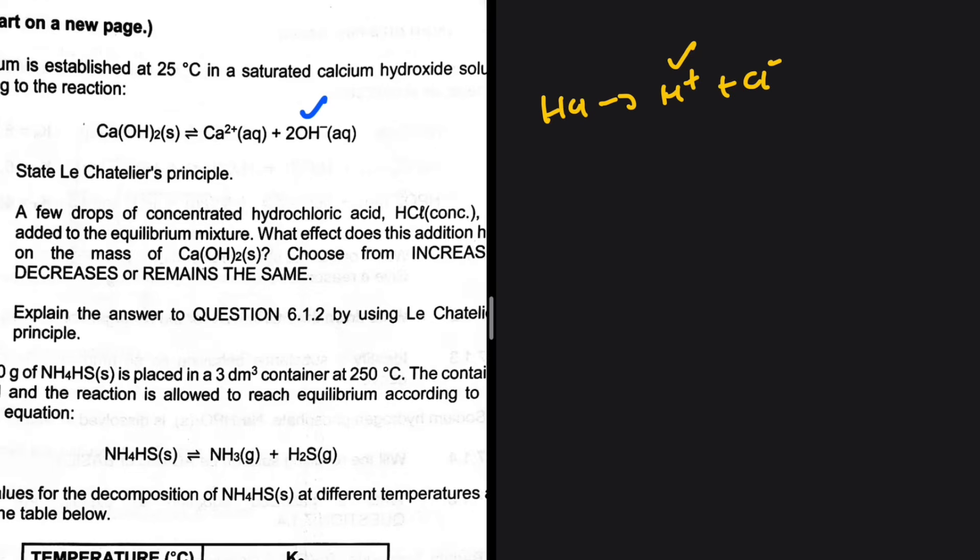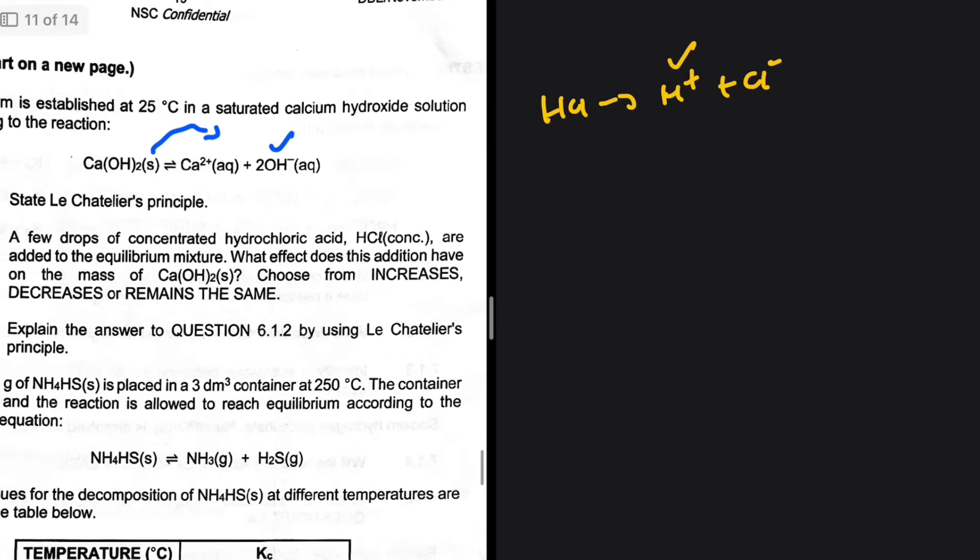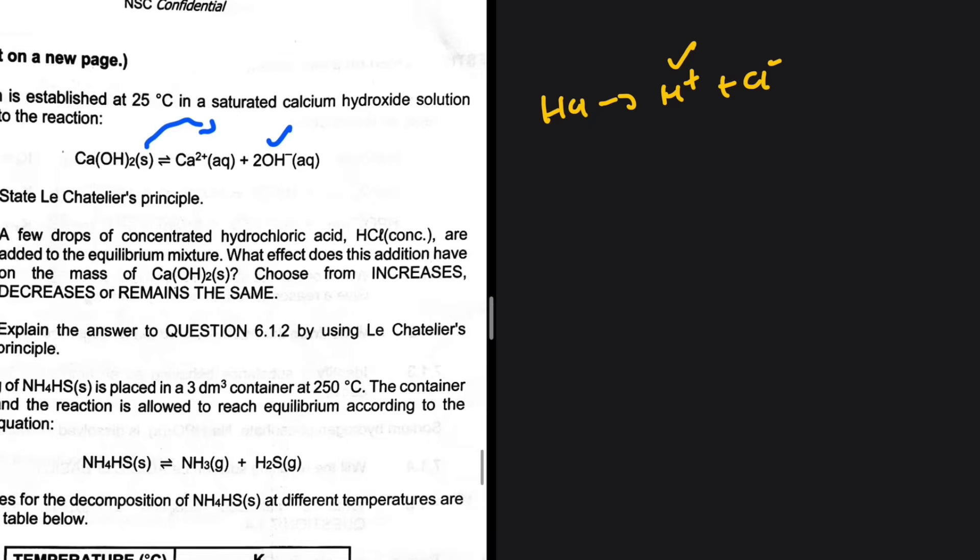If the amount of OH- goes down, then the system will want to reinstate a new equilibrium by opposing the change. Since the amount of OH- is decreasing, the system is going to favor the forward reaction so that OH- can increase. What effect does this have on the mass of Ca(OH)2? Well, it decreases.